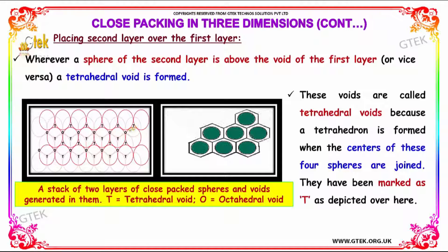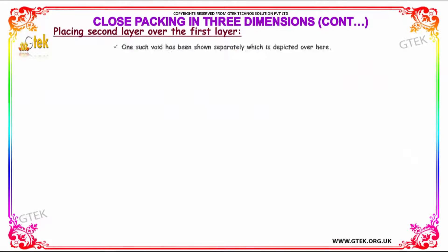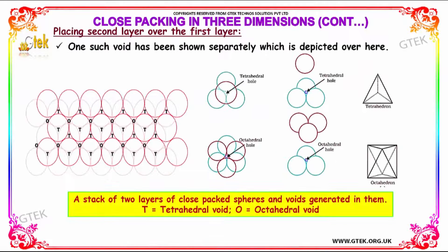This is called a tetrahedral void and this is called an octahedral void. Placing the second layer over the first layer, we can identify both the tetrahedral void and the octahedral hole.